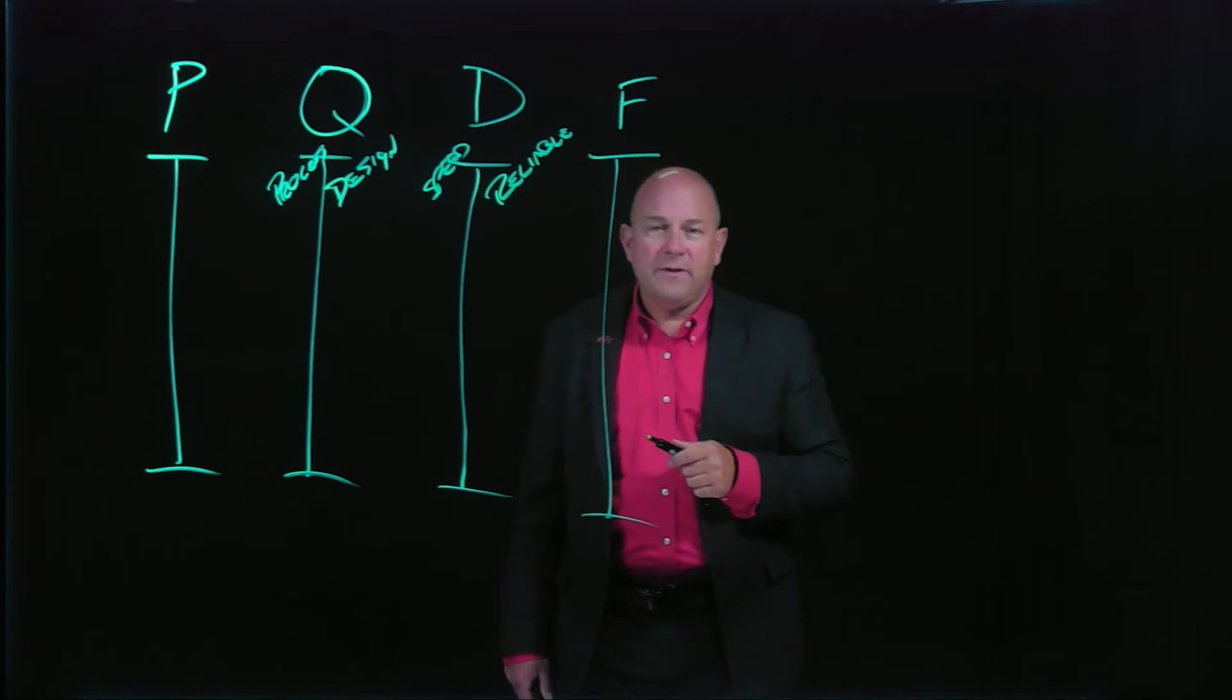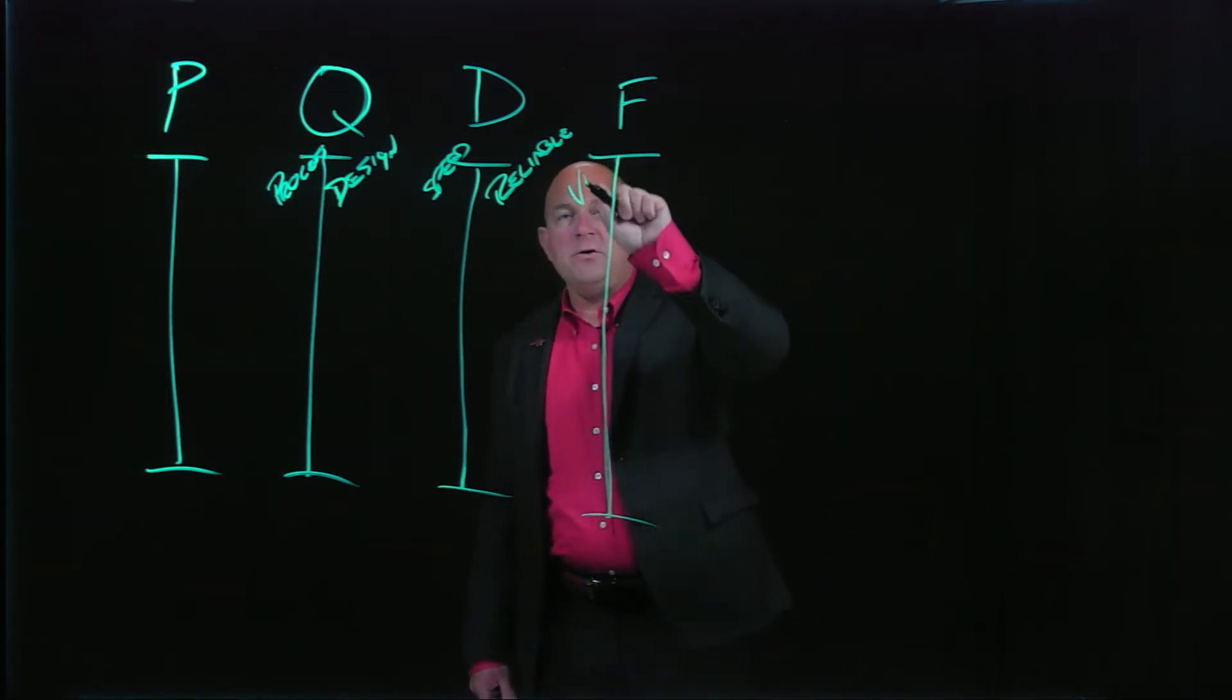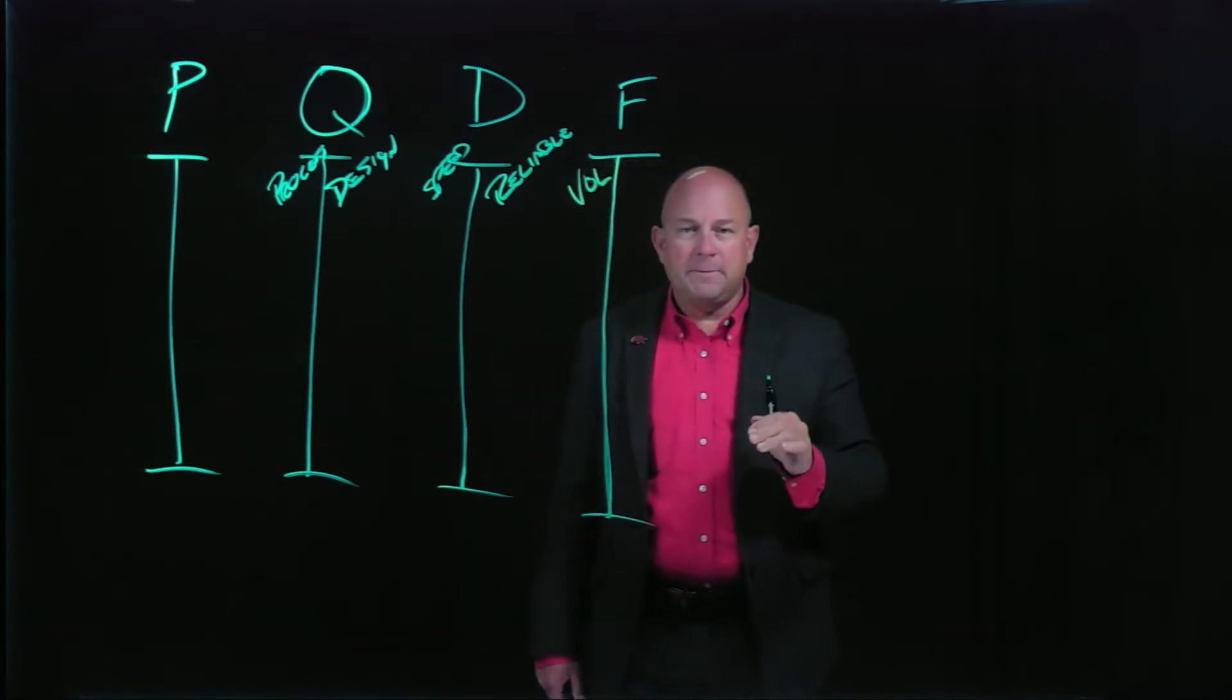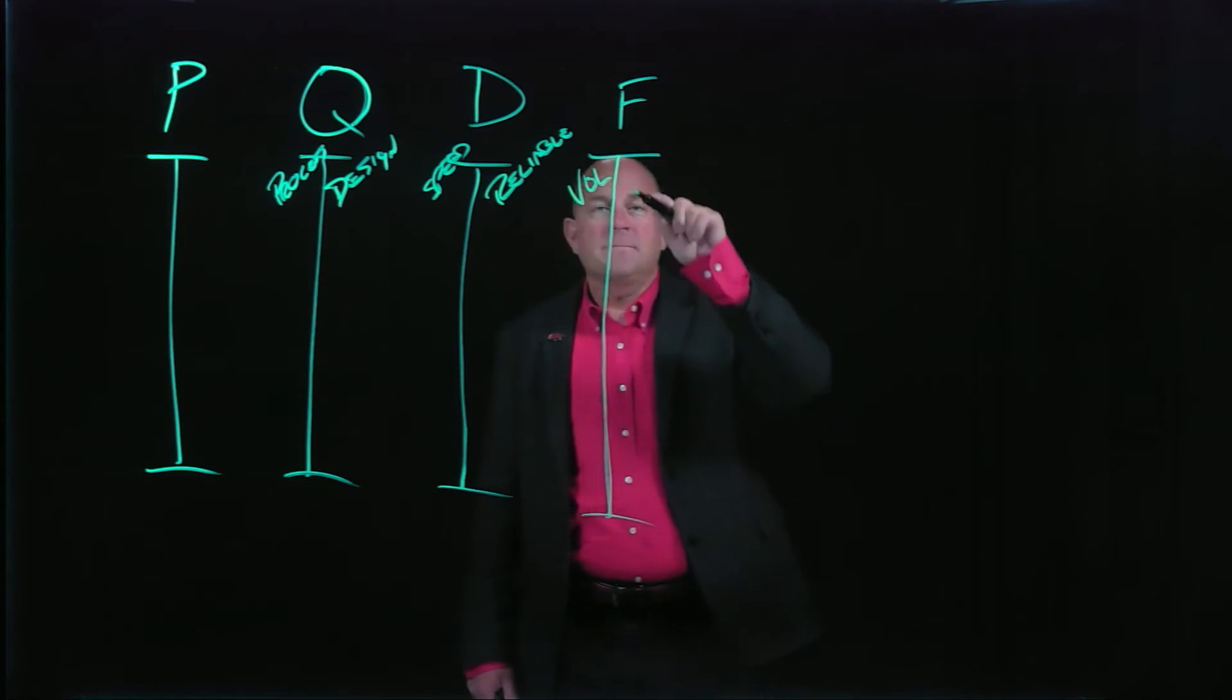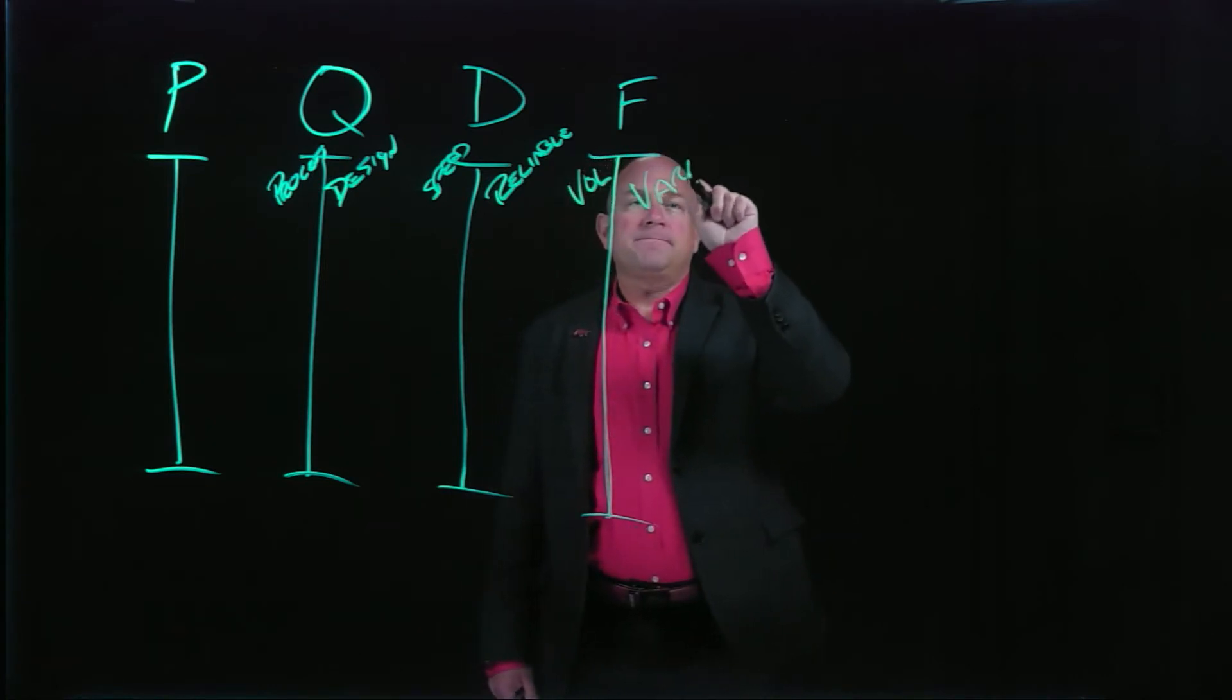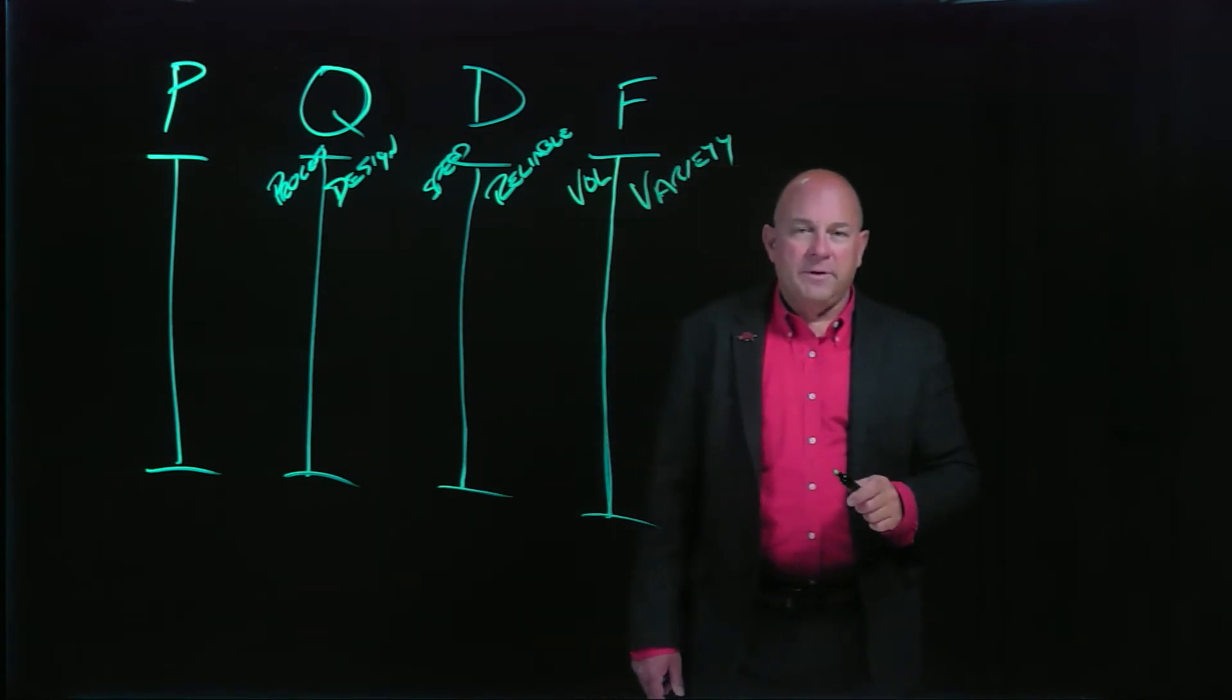And then finally flexibility. There are also two types of flexibility and those types of flexibility are volume flexibility, in other words the ability to flex the amount of a product that I provide my customers, as well as variety. So it's a quick snapshot of the four competitive dimensions.